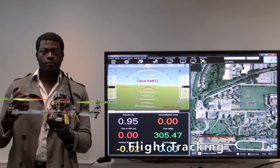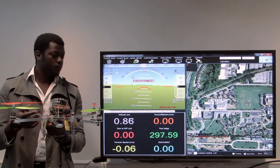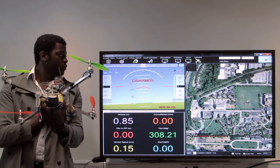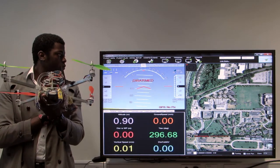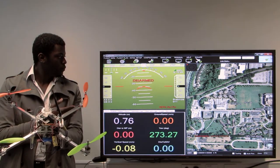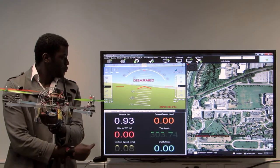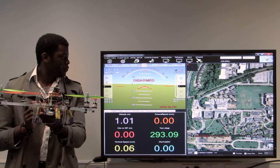It is also capable of sending flight information to a ground station. As you can see on the screen, it sends information about its orientation wirelessly using the telemetry module. This information is displayed on the ground station software on the screen behind me.